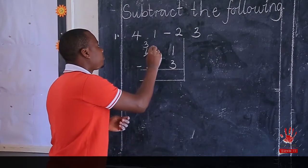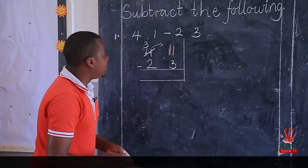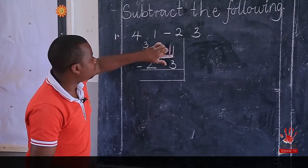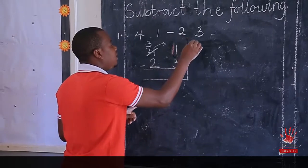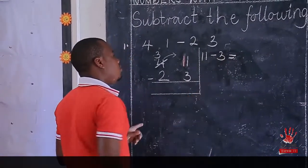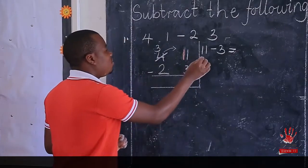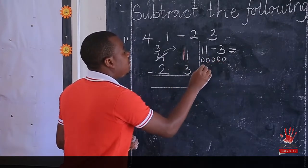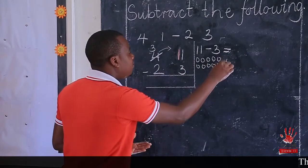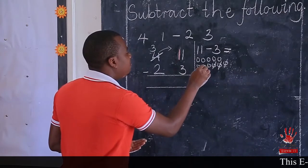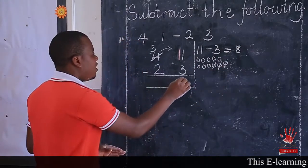We get one 10 here, regrouping from 4 to make it 3. We go to the one 10 and add to the 1 to have 11. So when we have 11, we shall now say 11 take away 3. We draw one through eleven, then remove 3: one, two, three. What remains? One, two, three, four, five, six, seven, eight. So 11 take away 3 is 8. I come here and write 8.